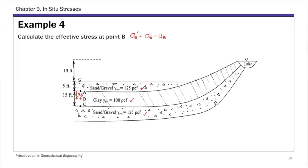Sigma B is the total stress. For point B, we have five feet of sand and gravel layer and then 7.5 feet of clay layer. Total stress accounts for everything on top — whether it's a sand layer, clay layer, or water body. So we have five feet of sand layer and 7.5 feet of clay layer.